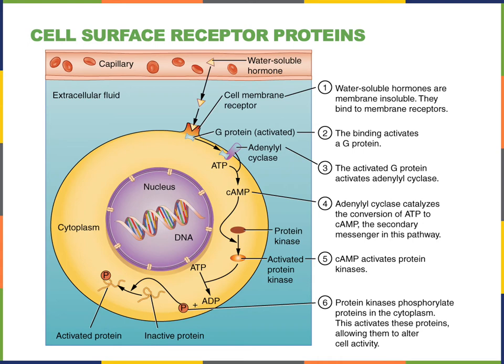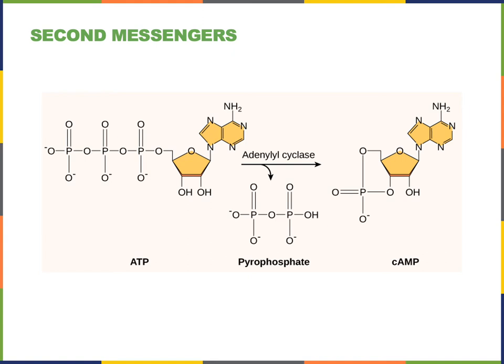A second messenger is a small chemical that functions as an intracellular signal. Typically, second messengers are not proteins. An example of a second messenger is cyclic AMP. Adenylyl cyclase is the enzyme that produces the second messenger cyclic AMP from ATP. Here we see the chemical reaction catalyzed by adenylyl cyclase: adenosine triphosphate (ATP) is converted to cyclic adenosine monophosphate (cyclic AMP) as two phosphate groups are released, forming another product known as pyrophosphate.